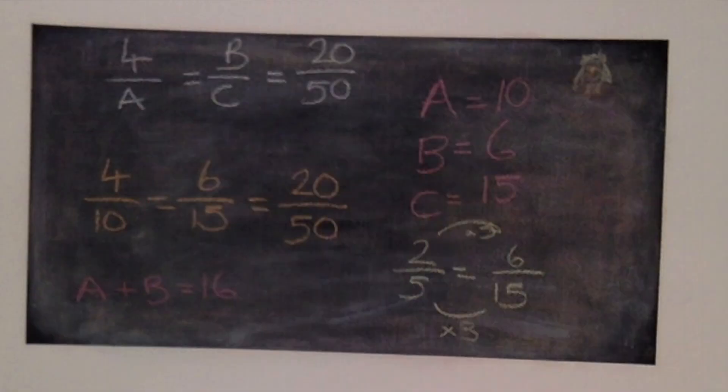Okay so now we have the superstar challenge answers and these are A equals 10, B equals 6 and C equals 15. You can see here that this creates the equivalent fractions of 4/10ths is the same as 6/15ths which is the same as 20/50ths.